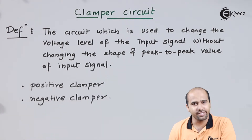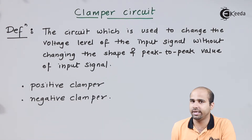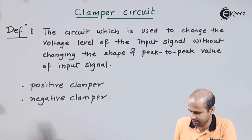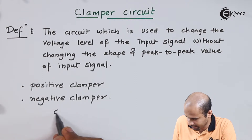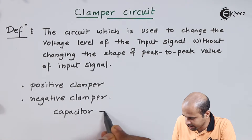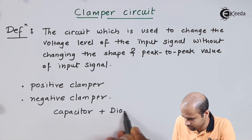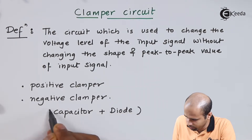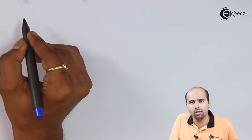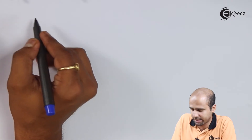Let us study positive and negative clamper in detail. This clamper circuit is used along with one passive component, that is a capacitor. So capacitor plus diode will give you the clamper circuit. Let us study one by one — first of all we will study the negative clamper.